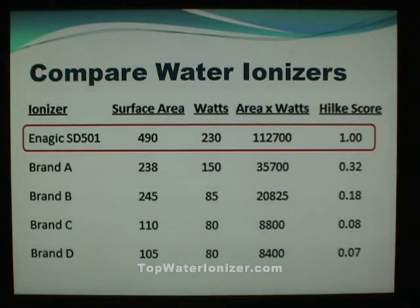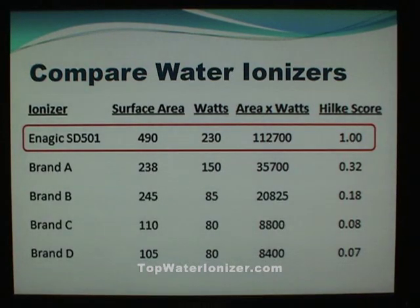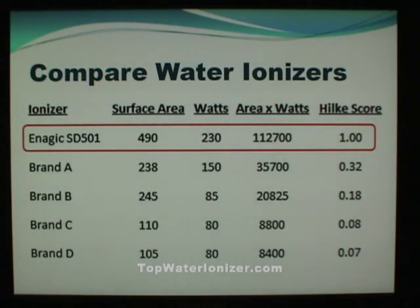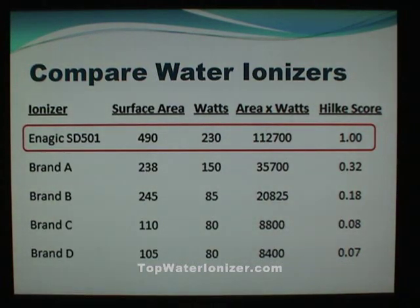Brand B is a value of 0.18 or 18%. Brand C is 0.08, which is 8%, and Brand D is 0.07 or 7%. So when we start to look at the numbers, it gets clear very quickly that nothing compares with the Enagic SD501. I have purposely selected the competition brands that are the closest to the Enagic SD501.